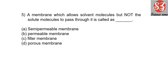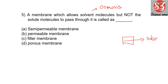Next: 'A membrane which allows solvent molecules but not solute molecules to pass through it is called...' This membrane is used in osmosis. It allows only the movement of solvent molecules — solvent molecules can pass through but solute molecules cannot. This membrane is called a semi-permeable membrane, because it only allows some things to pass and not others.